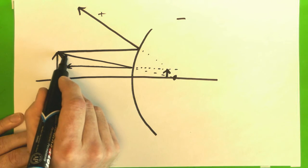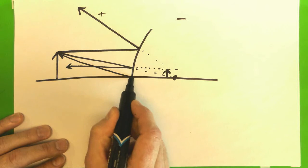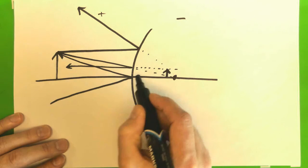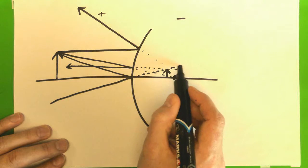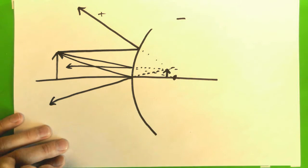We could do a check with our third central ray, which would also appear to be coming from that spot. So that checks out.